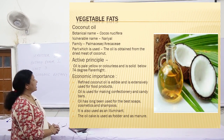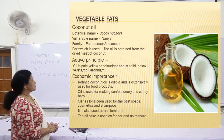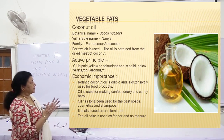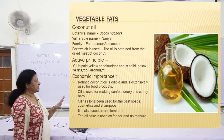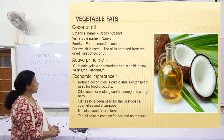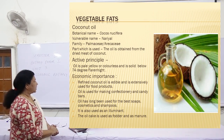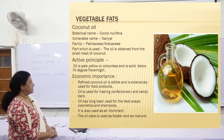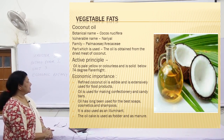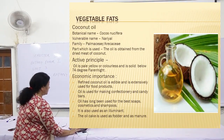Some vegetable fats: coconut oil. Botanical name: Cocos nucifera. Vernacular name: narial. Family: Palmae or Arecaceae. The oil is obtained from the dry meat of the coconut — the white portion we eat, called copra. The active principle: the oil is pale yellow or colourless and is solid below 74 degrees Fahrenheit. Economic importance: refined coconut oil is edible and extensively used for food products. Oil is used for making confectionery and candy bars. It has long been used for soaps, cosmetics and shampoo. It is also used as an illuminant, and the oil cake is used for fodder and as manure.